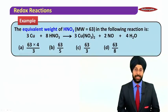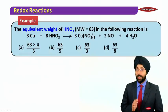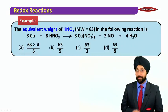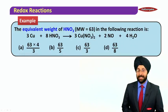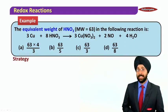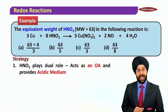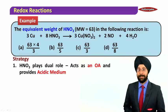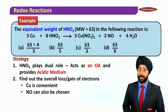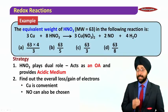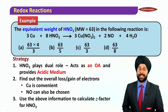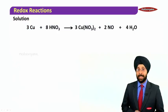The equivalent weight of HNO3 (molecular weight 63) in the reaction between copper and HNO3 giving copper nitrate, NO, and H2O — note that HNO3 here is not just acting as an acid but also as an oxidizing agent. So HNO3 has dual roles: it acts as an oxidizing agent and it provides the acidic medium. We will find the overall loss or gain of electrons, and it is better to focus on copper because copper is only being oxidized.